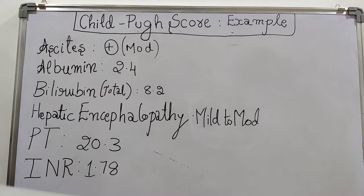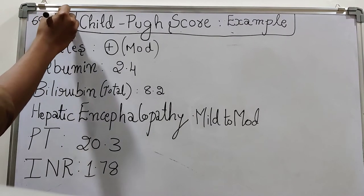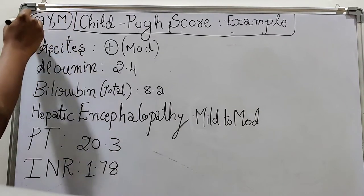A patient of age 69 years, male, has been admitted to the hospital. The parameters of Child-Pugh score were as follows: